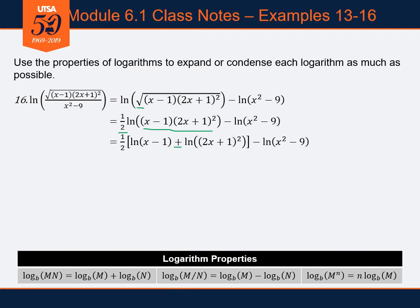Notice that I put brackets with the one half in front, because that one half was on the whole logarithm, so it needs to be applied to both the natural log of x minus one and the natural log of two x plus one squared. To show that and remind myself, I put the one half in front of a pair of brackets so that I remember it needs to be distributed and applied to each one of those logarithms.